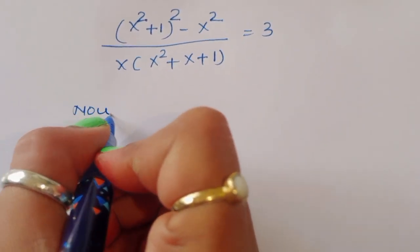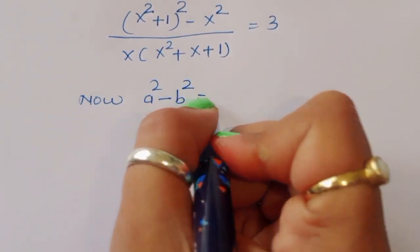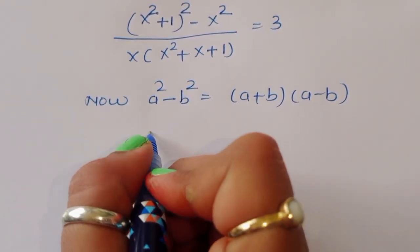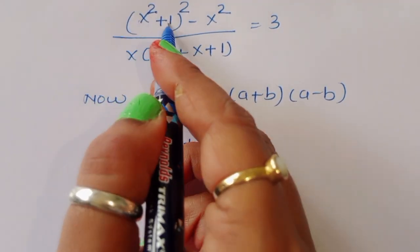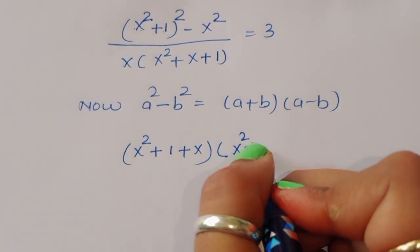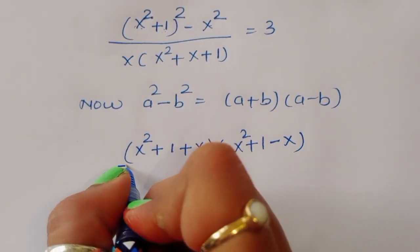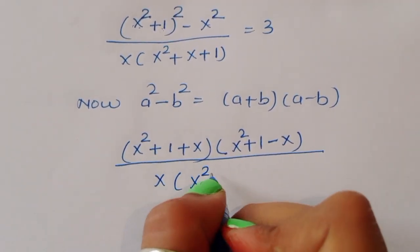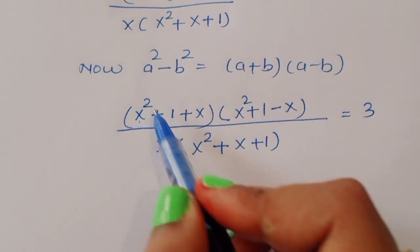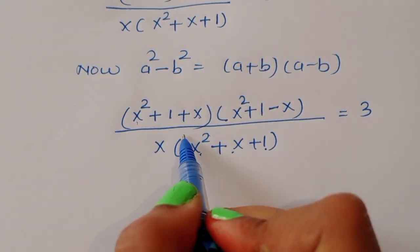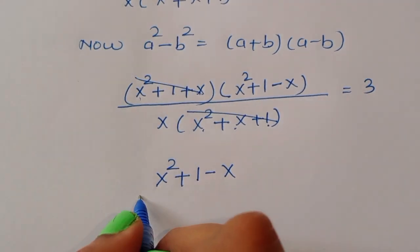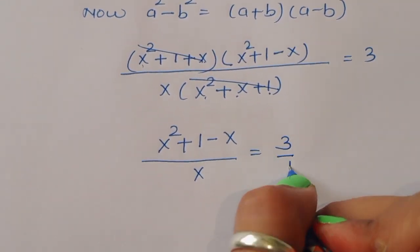We apply the identity a² - b² = (a + b)(a - b). Here a = x² + 1 and b = x, so the numerator becomes (x² + 1 + x)(x² + 1 - x). The factor (x² + x + 1) cancels with the denominator, leaving (x² + 1 - x) divided by x equals 3.